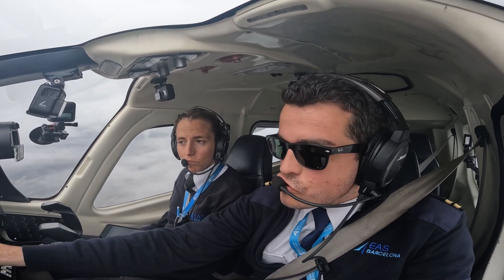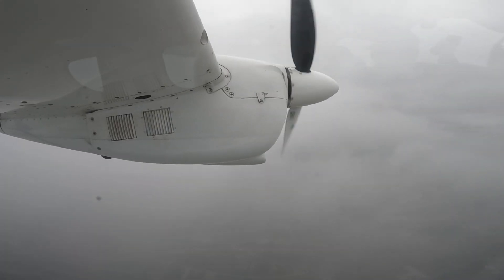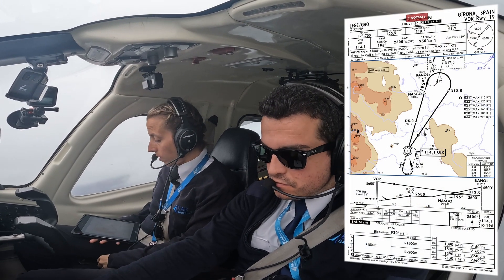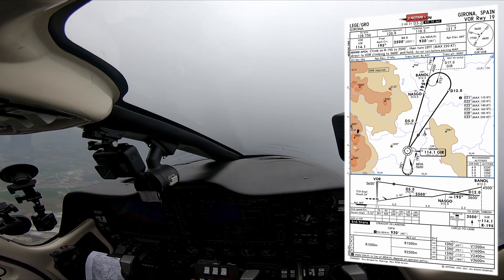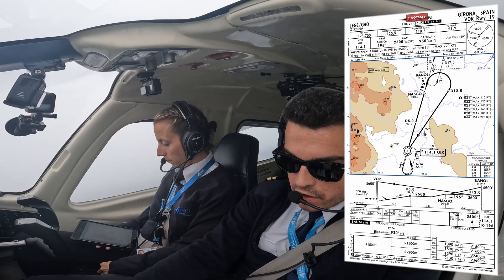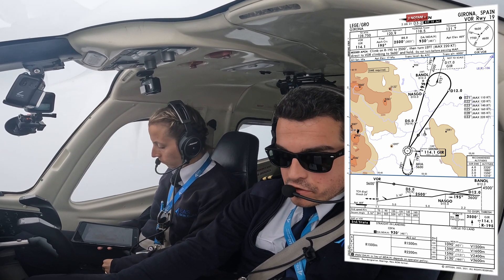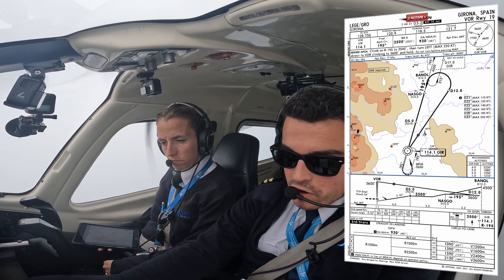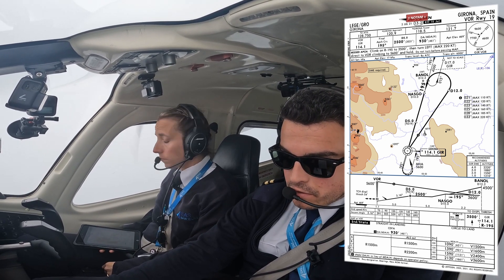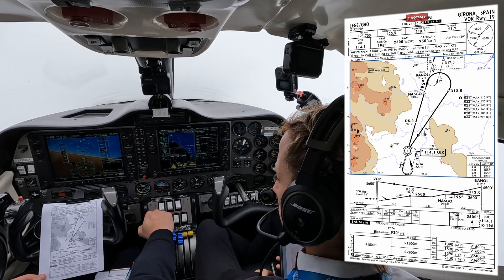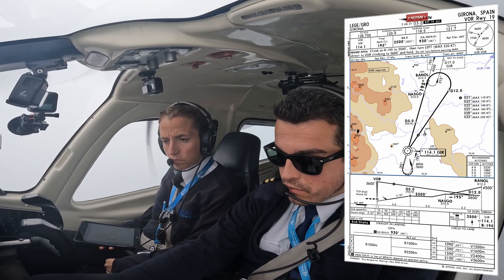VOR for runway 19, effective on the 15th of July — we have the same one. We are in contact with Girona. VOR on Girona 114.1, which is set with C1, and now we're on our way to the VOR. Final approach course 195, final approach fix 2500, minimum descent altitude set to 930, and the minimum safe altitude will be for us at this point 4600 and then 5600.